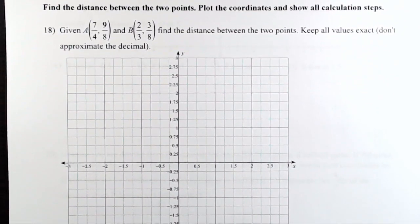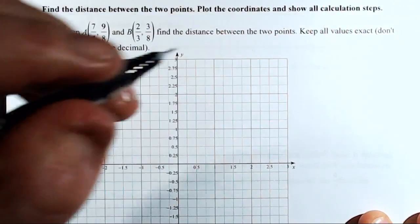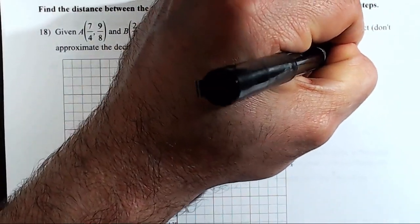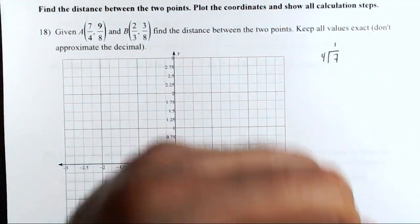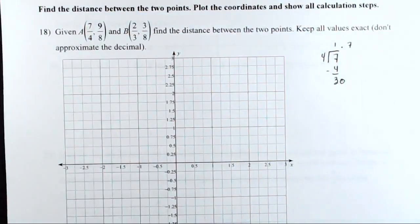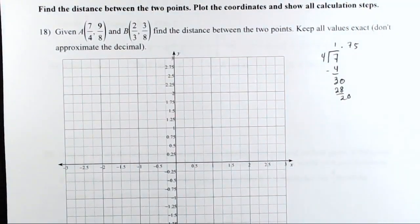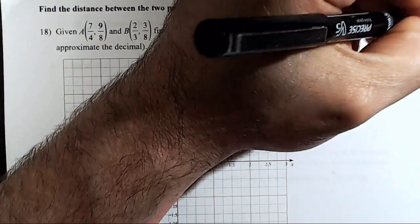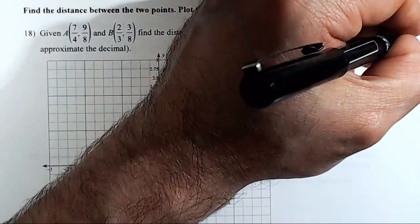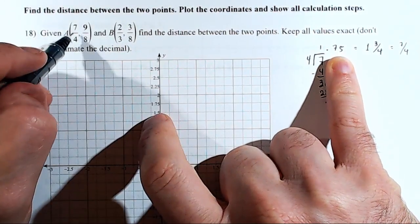Number eighteen: find the distance between two points. The coordinates involve fractions, so if you need to plot them first, convert to decimals: 7/4 = 1.75, 9/8 = 1.125, 2/3 ≈ 0.667, 3/8 = 0.375. Point A is approximately (1.75, 1.125) and Point B is approximately (0.667, 0.375). When computing the distance formula, we'll use the exact fractions.